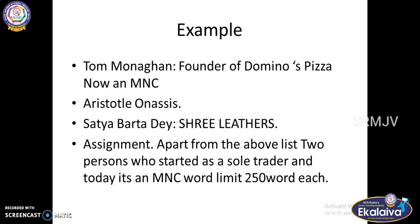Another example is Aristotle Onassis. He was one of the richest men in the world by 1960. He migrated to Argentina from Greece, and at age 16 he landed a big tobacco order. He reinvested in his business, accumulated more money, and his small business was built into a great financial empire, making him one of the richest men in the world.